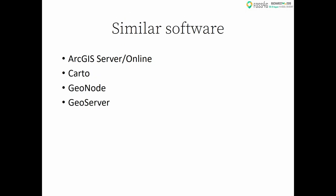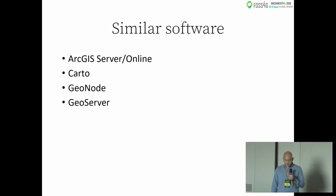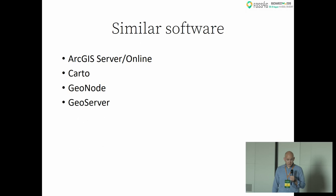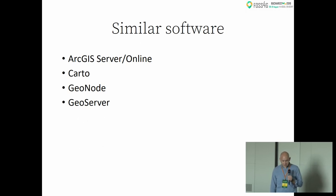Some similar software includes ArcGIS Server Online, CartoDB — now called Carto — which was an inspiration for this project. GeoNode has some similarities, and GeoServer overlaps GC2 in some areas.